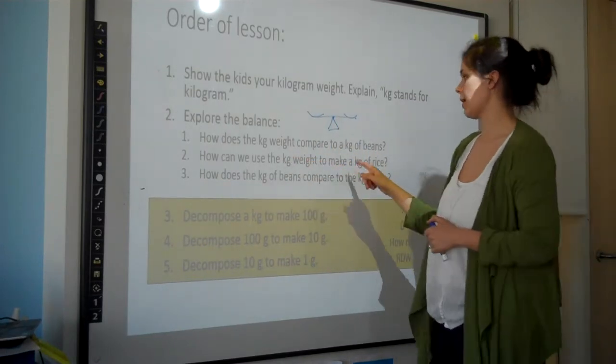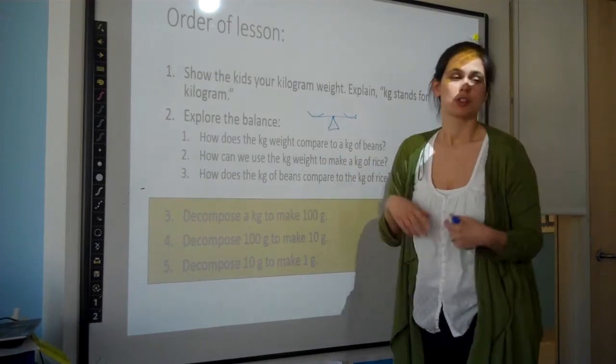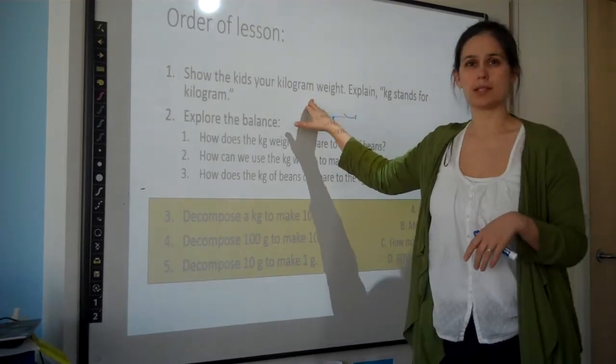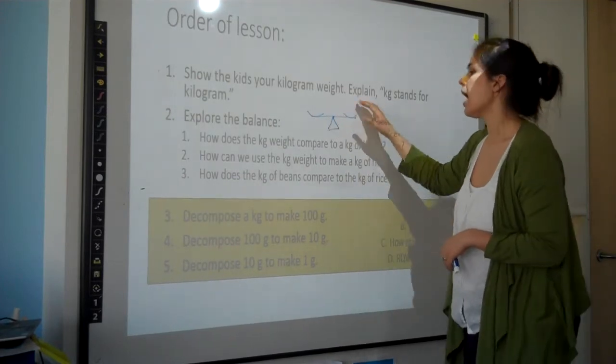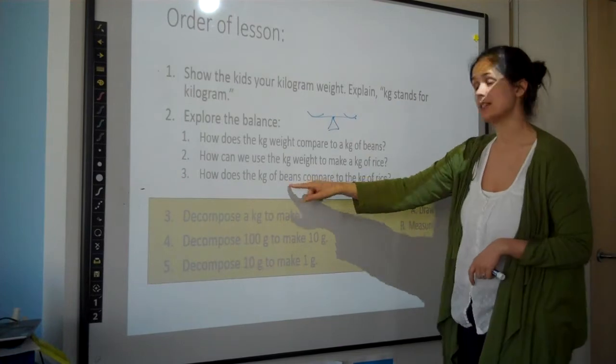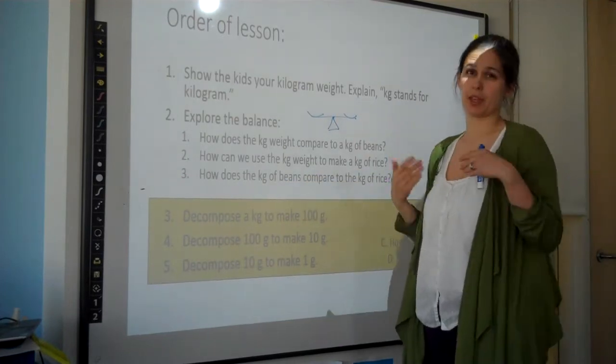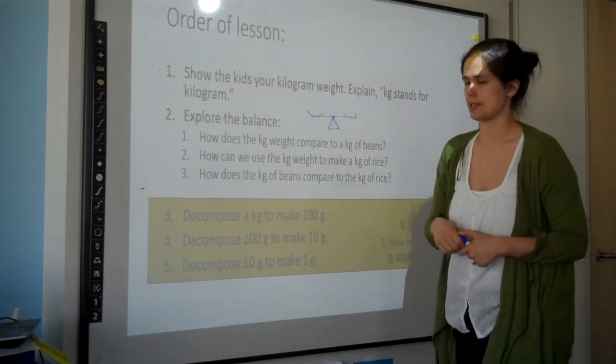Then how can we use the kilogram weight to make a bag of rice? So then as a class, you put the kilogram weight on one side, and then you keep adding rice in the other until you make a kilogram of rice. And then how does a kilogram of beans compare to a kilogram of rice? And since they're both kilogram, they should also weigh the same. I'd practice that.